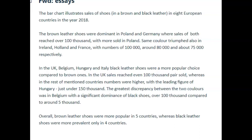Watch your spelling here — "Same color triumphs." You could say "the same color triumphs." Also in Ireland, Holland and France, with numbers of 100,000, 80,000 and 75,000 respectively.